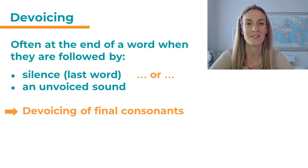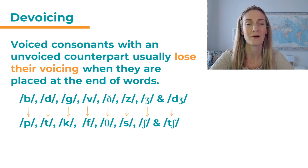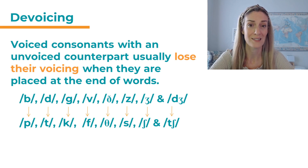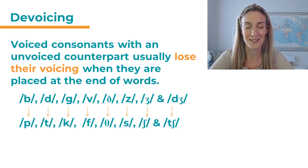And we call this the devoicing of final consonants. Voiced consonants with an unvoiced counterpart usually lose their voicing when they're placed at the end of words, or when they're followed by an unvoiced sound. So that means 'b' changes to 'p', 'd' changes to 't', 'g' to 'k', etc. And this process is what we call devoicing.